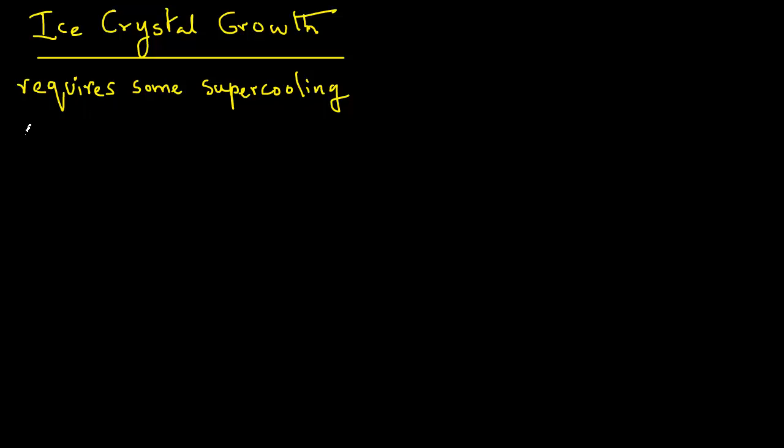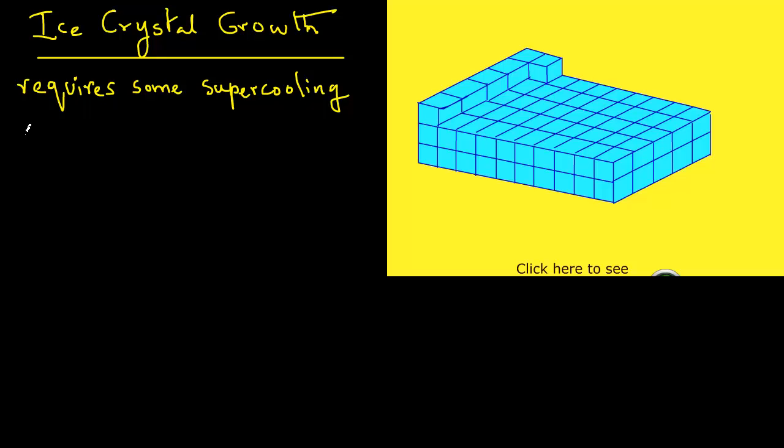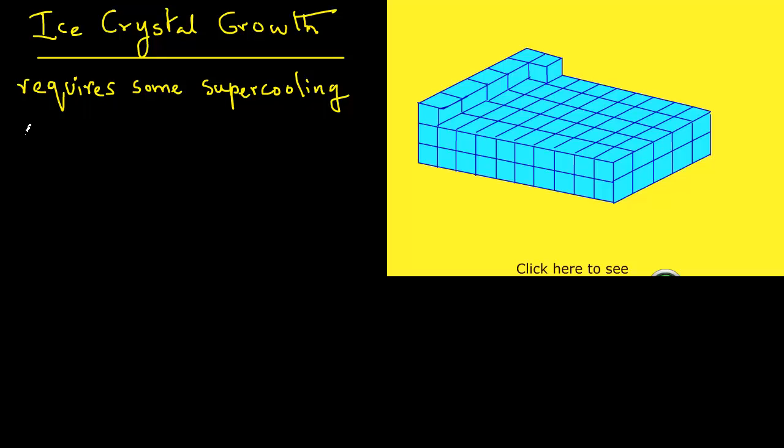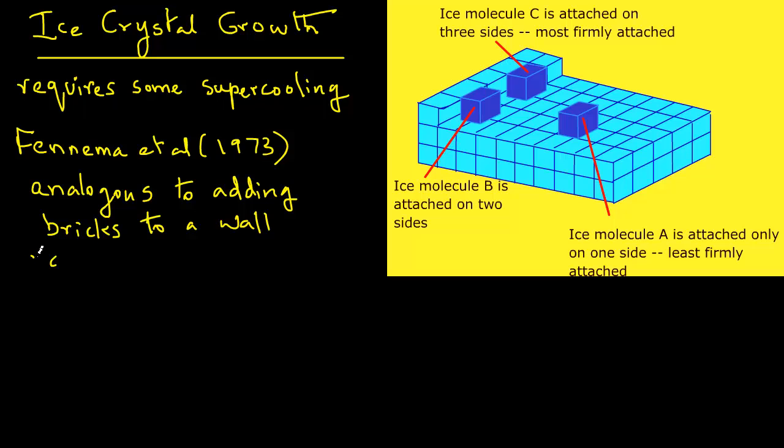To answer this question, let us consider this figure where we will look at a perfect nucleus as shown schematically. This was presented first by Professor Fennema. The crystal growth is considered analogous to adding bricks to a wall. When a cubic molecule attaches to the surface at site A, only one of its surfaces is held by the hydrogen bond, in this case the ice crystal.